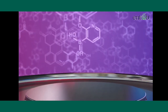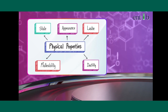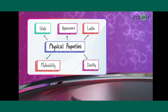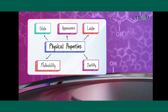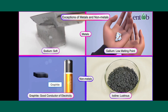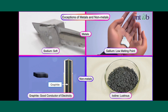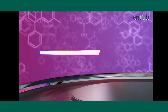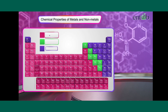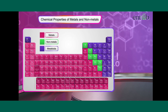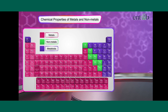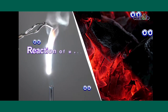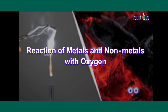Hello everyone. In our previous modules we have learned about the physical properties of elements. We noted that there are exceptions to the general physical properties of both metals and non-metals. Let us now study the chemical properties of metals and non-metals so as to understand the differences between them.